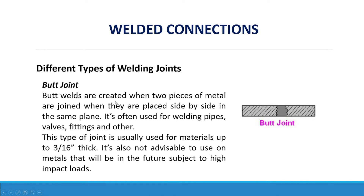Butt welds are created when two pieces of metal are joined placed side by side in the same plane. It is often used for welding pipes, valves, fittings, and other components. This type of joint is usually used for materials up to 3/16 inch thick, and it is not advisable to use on metals that will be subject to high impact loads in the future.